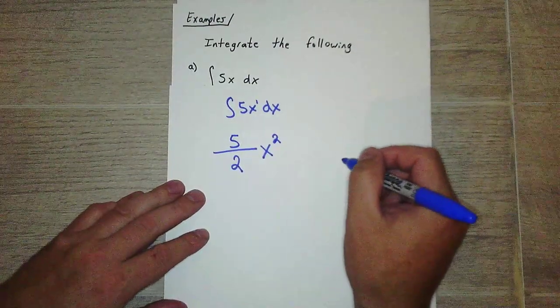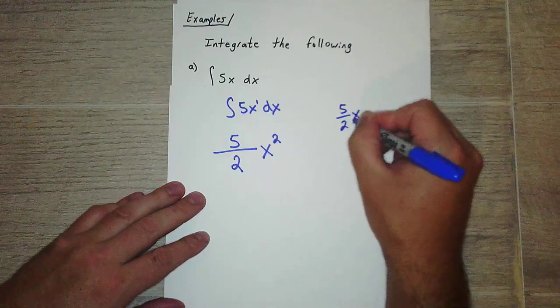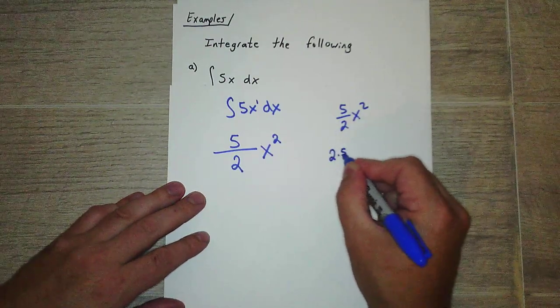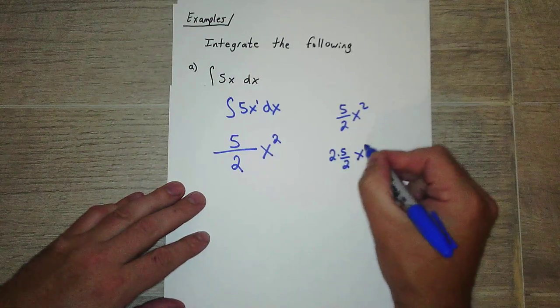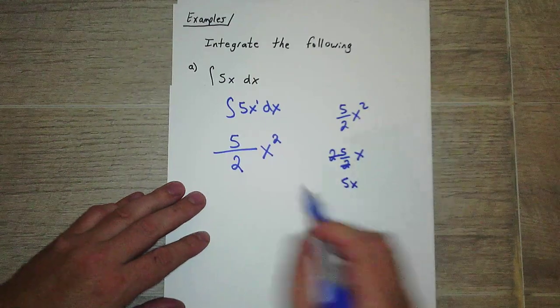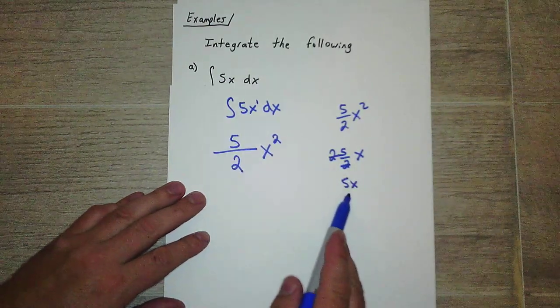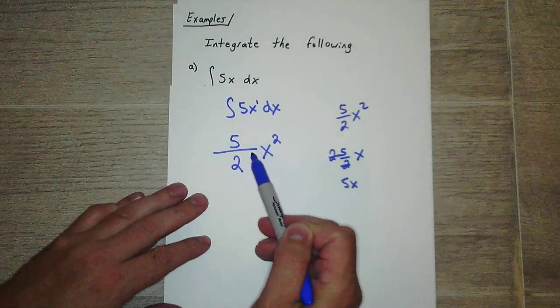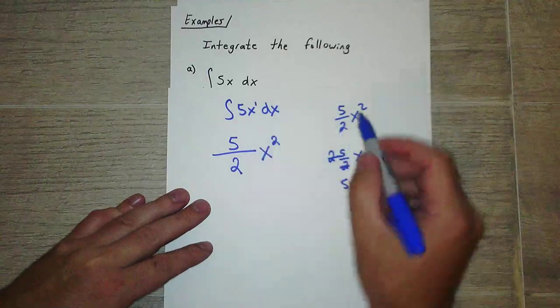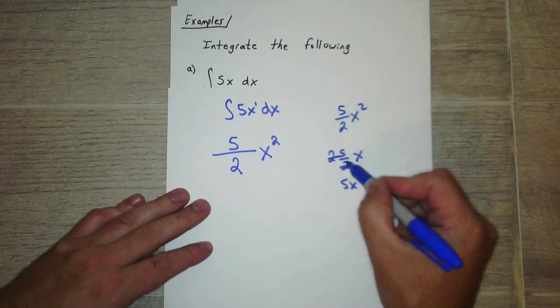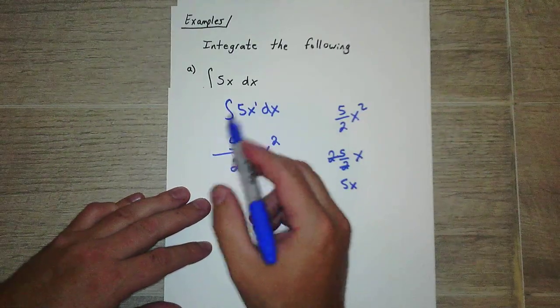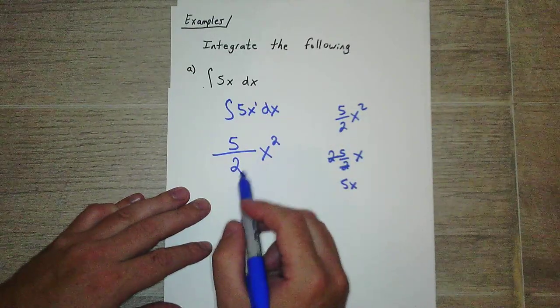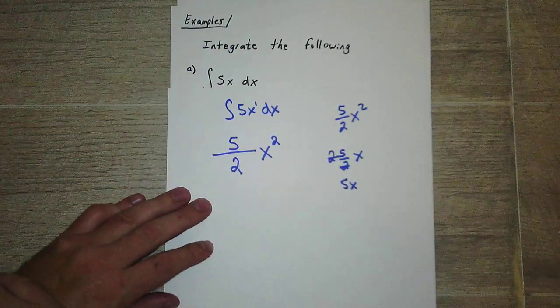Here's why that's called the anti-derivative. Let's take this, 5 halves x squared, find the derivative of that. Remember how the derivative, you take 2, you bring it down. 2 times 5 halves, and then you subtract 1. So 2 minus 1 is 1. So that cancels and we're just left with 5x. So that's why this is called the anti-derivative. If you take the derivative of this and get that, and if we integrated that, we'll get what we originally started with. So it's opposite. The 5 stays here, you bring the 2 down and multiply it and subtract 1. Same scenario, but it's opposite. So you bring the 1 down and you add 1, but instead of multiplying it, like we did here, we divide it. And then you add 1 to your exponent.